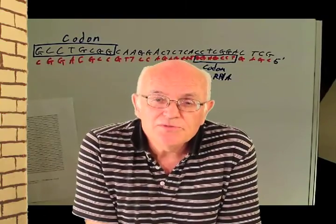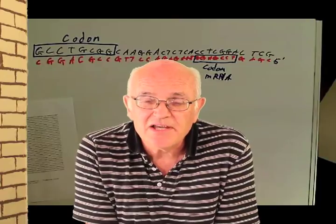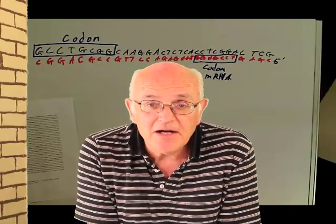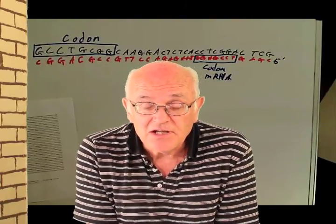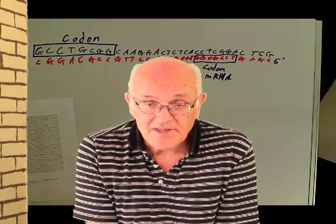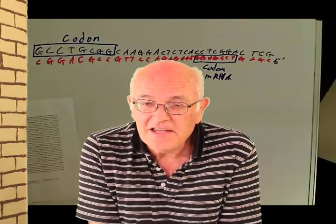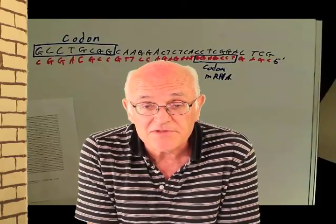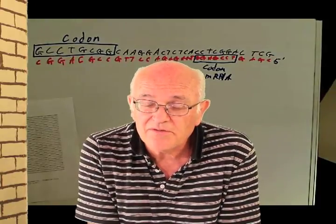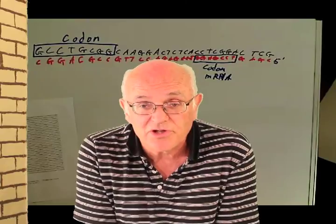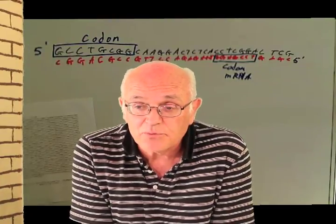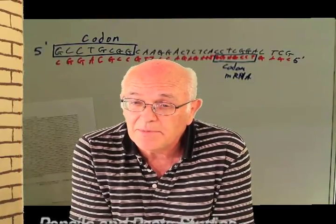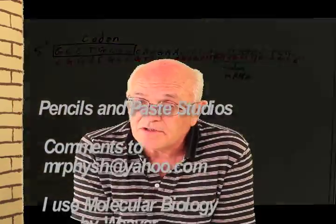When they do shotgun genomic sequencing, they cut the DNA up in various pieces which overlap, sequence those pieces, and then feed everything into a series of computer programs. The computer programs sort everything out and tell you what the original strand was. The programs have to be written to accommodate the fact that they are not sure which end they are looking at.